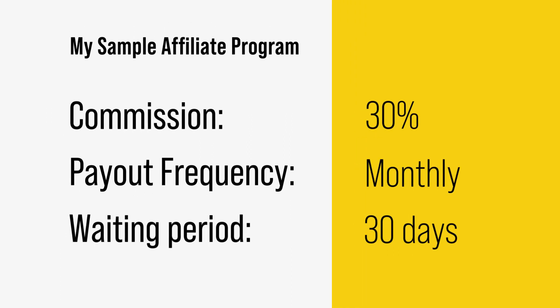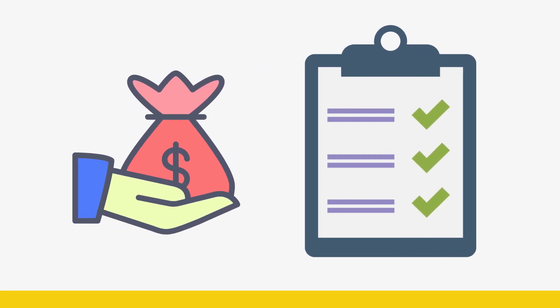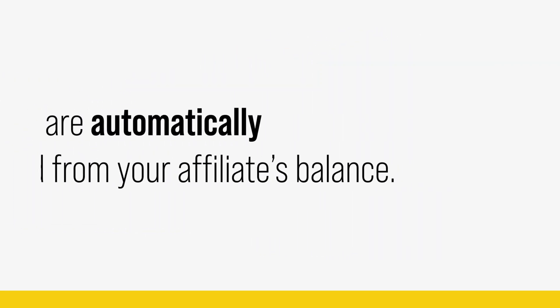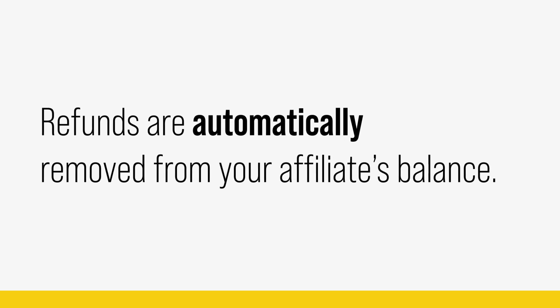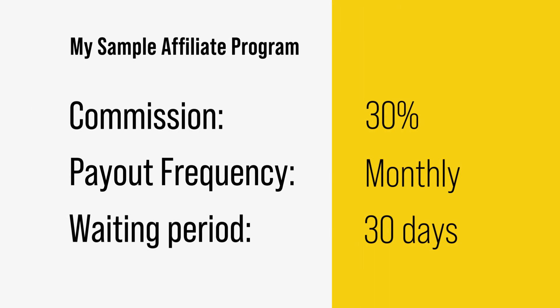Easy Affiliate acts as a ledger: as commissions come in, it adds them to what your affiliates are owed until you, the merchant, pay them. Also, if a subscription or order gets refunded, it will automatically remove that commission from the affiliate's balance. Now that I've decided how my affiliate program is structured, let's jump in to setting it up on my WordPress site.